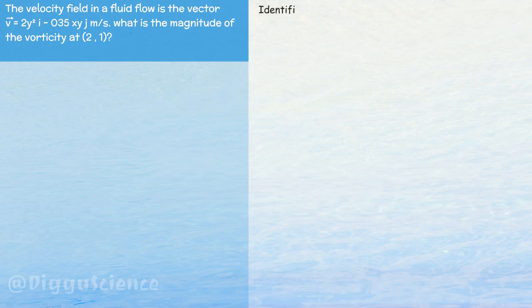Okay, the first stage is identification. The velocity component on the x-axis u is equal to 2y squared. The velocity component on the y-axis v is equal to minus 0.5 xy.